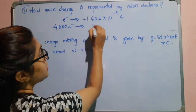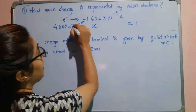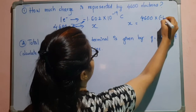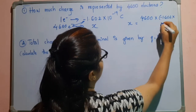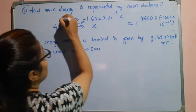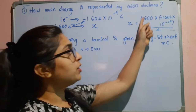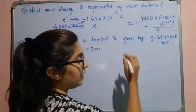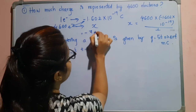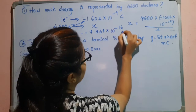Here I will write it as x. So x is equal to — we will cross multiply: 4600 × (−1.602 × 10⁻¹⁹), divided by 1. After solving this you will get the answer: minus 7.369 × 10⁻¹⁶ coulomb.